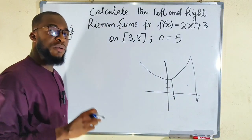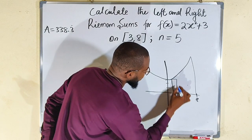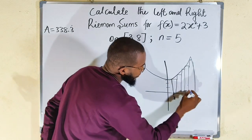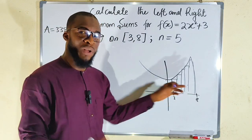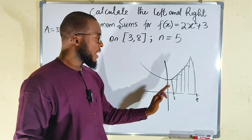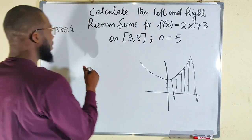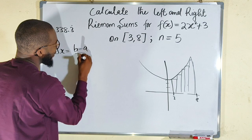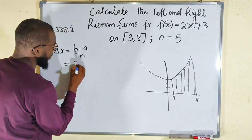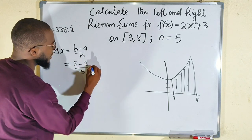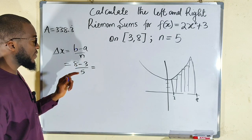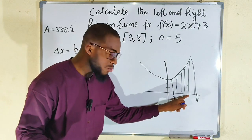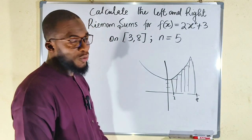For the left Riemann sum, the height of every single rectangle depends on the left endpoint. We inscribe five rectangles like this, find the area of each one, and add them all together. They must have the same base, which we call dx. So dx equals b minus a divided by n, which is 8 minus 3 divided by 5 — that equals 1. So the base of every rectangle is 1 unit.